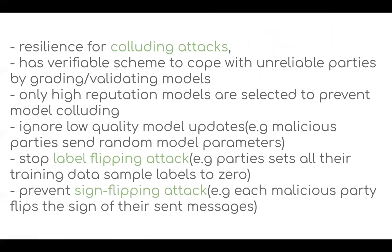Regarding the threat model: the system provides resilience against colluding attacks through a verifiable schema that grades and validates models — only high-reputation models are selected to prevent model colluding. We ignore faulty local model updates; for example, malicious parties sending models with random parameters can be detected and filtered out. We also stop label-flipping attacks, where parties set all training data sample labels to zero, and sign-flipping attacks, where malicious parties flip the signs of their sent messages. These attacks are mitigated by using the consortium network.